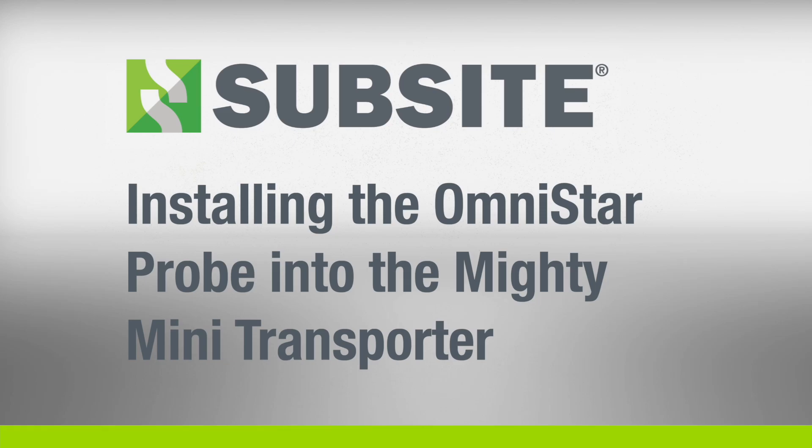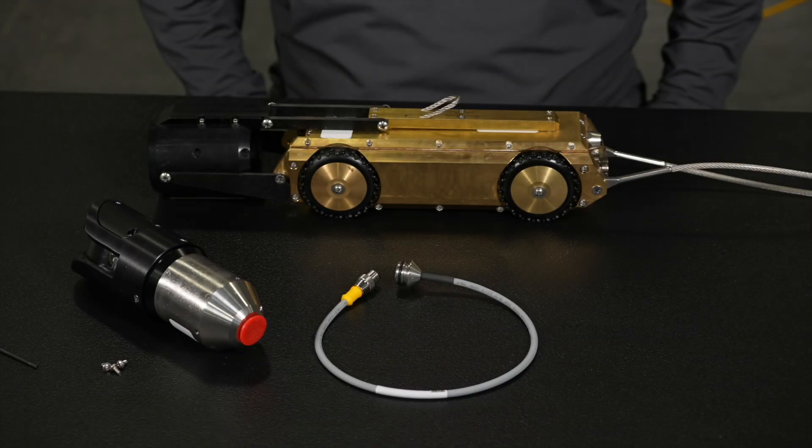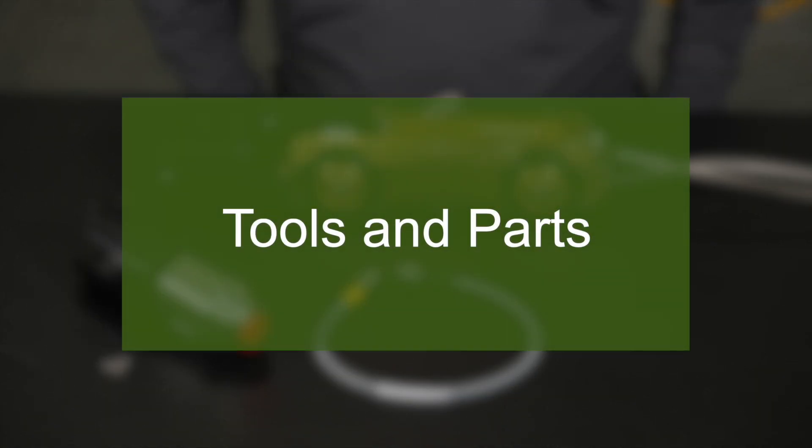In this video, we will install the Omnistar probe into the Mighty Mini transporter. To perform this installation, you will need the following parts and tools.